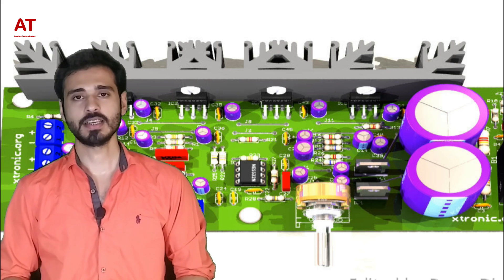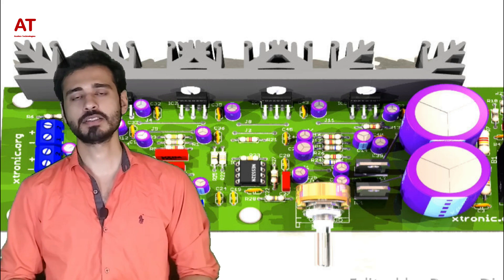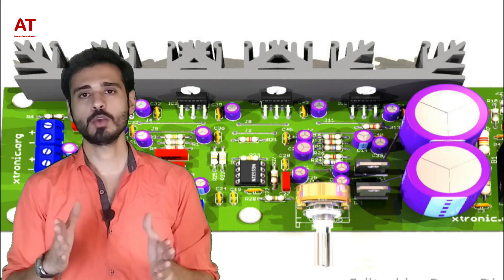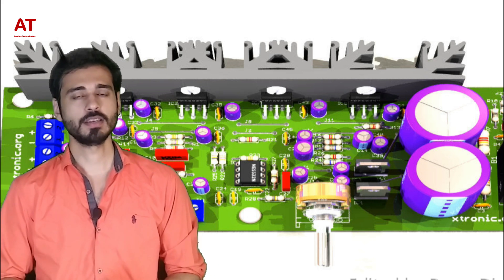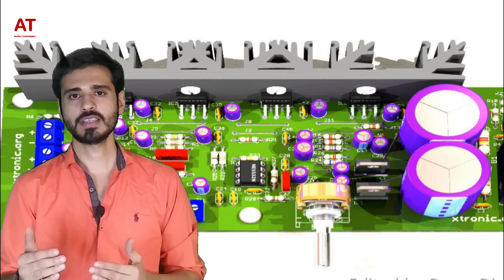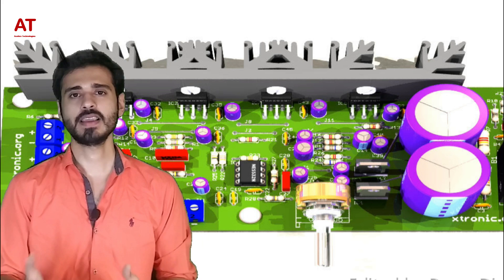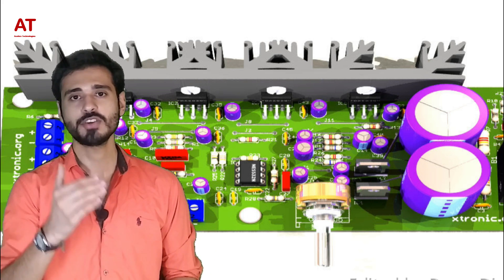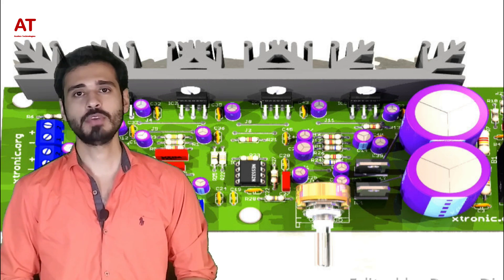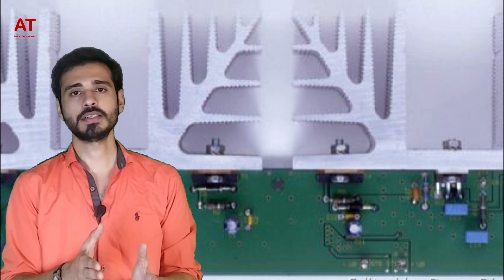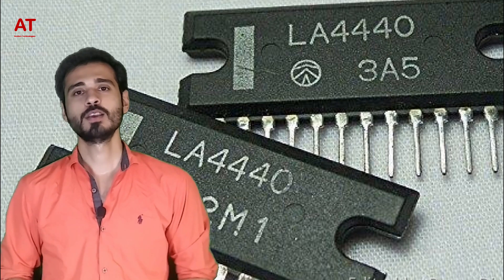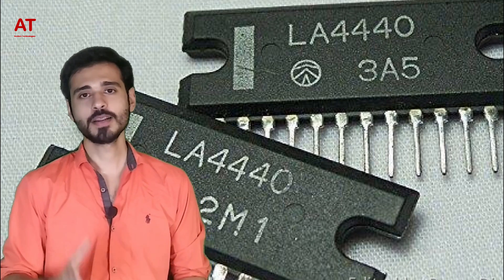With TDA2030A, you can bridge two ICs in parallel to increase power and get around 32W output. However, TDA2050 cannot be bridged. So that is one key difference — TDA2030A can be bridged but TDA2050 cannot be bridged.